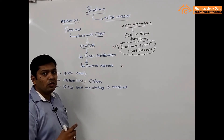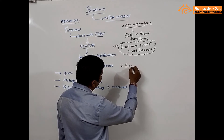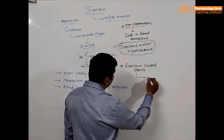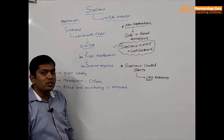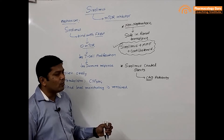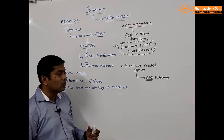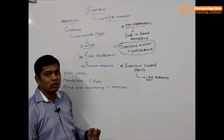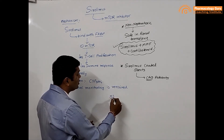Sirolimus is also used in the coating of stents. Sirolimus-coated stents are used in CAD — coronary artery disease — patients. In angioplasty, there are two therapies: balloon therapy and stent therapy. Balloon therapy is now less often used due to higher risk of artery rupture, while stenting is the main therapy used in PCI — percutaneous coronary intervention — during myocardial infarction.